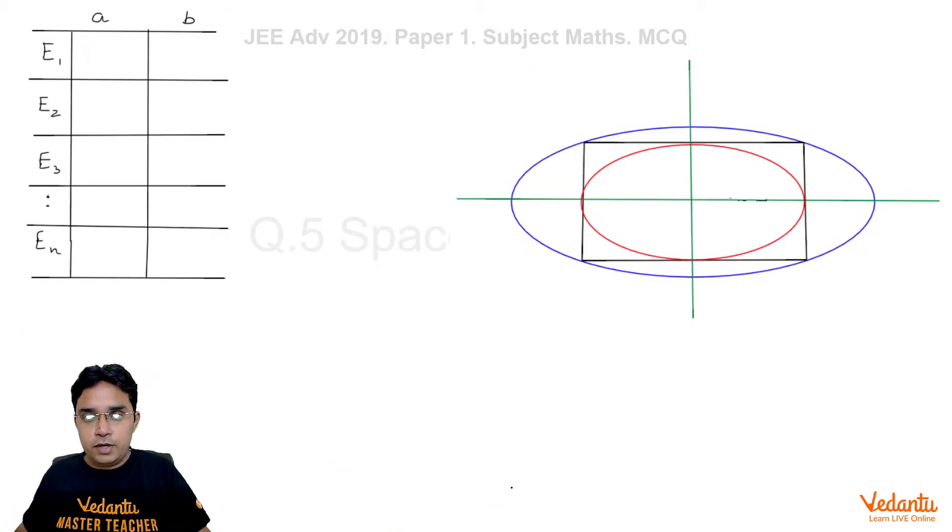Let us go, let us move forward. Now, this blue one is the ellipse and this black one is the R1. So I have already told you R1 has sides to be 3√2 and 2√2.